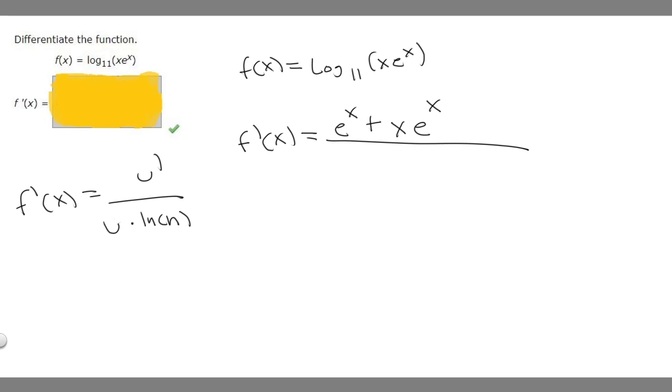So let's just rewrite our inside. So x times e to the x, and then we multiply it by the natural log of our base number, which is, in this case, 11. So we multiply by natural log of 11.